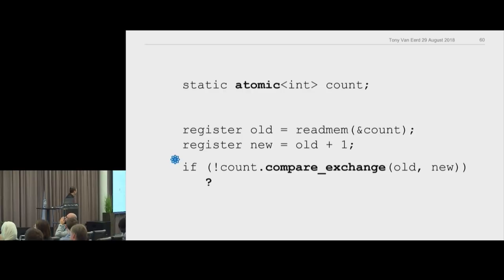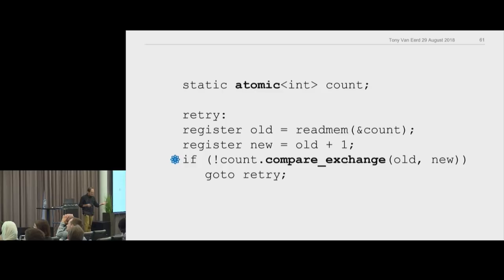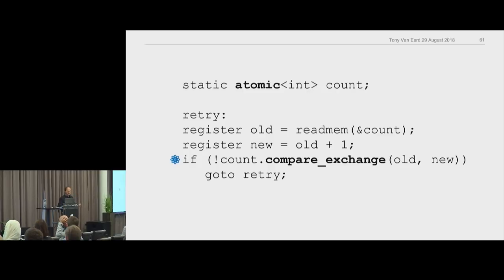If compare_exchange doesn't succeed — count has changed behind your back — you don't write it. Probably what you'll do is go back to the top and retry. You've got count at 17, you'd like to make it 18, you go to make it 18 and it's 24 — what happened? So you go back to the top: okay it's 24, let's make it 25. But no — you keep trying until you get your chance.